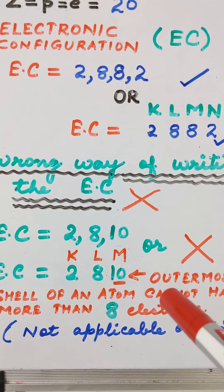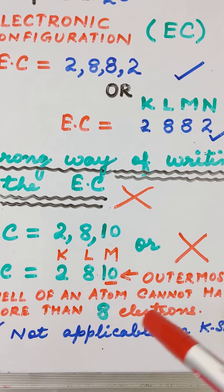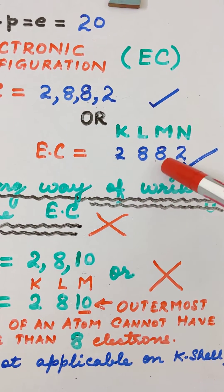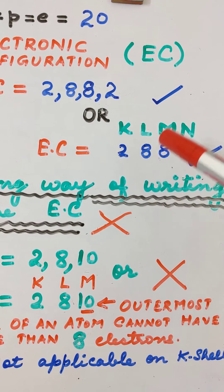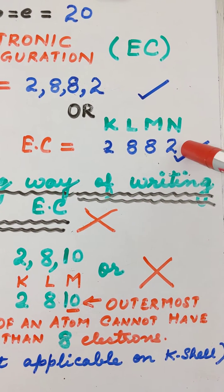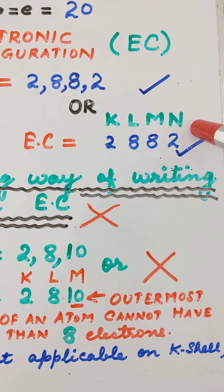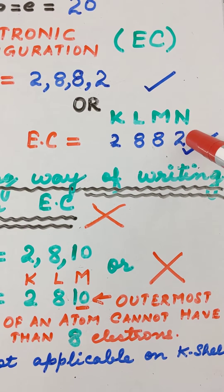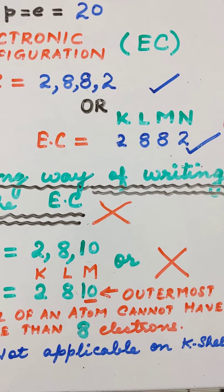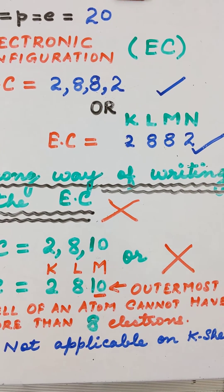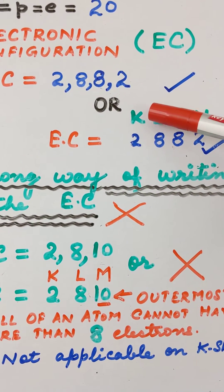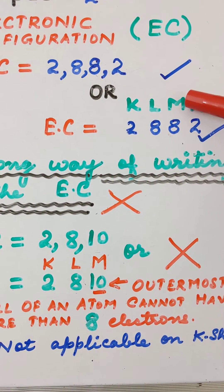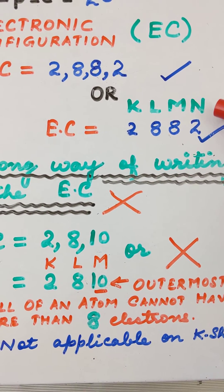Therefore, this is not the correct way of writing the electronic configuration for calcium. So instead, what we do is we put 8 electrons in the M shell and the remaining 2 electrons in the N shell. Because now the outermost shell is not having more than 8 electrons in it. Therefore, the correct way of writing the electronic configuration for calcium is: 2 electrons in the K shell, 8 electrons in the L shell, 8 electrons in the M shell, and 2 electrons in the N shell.